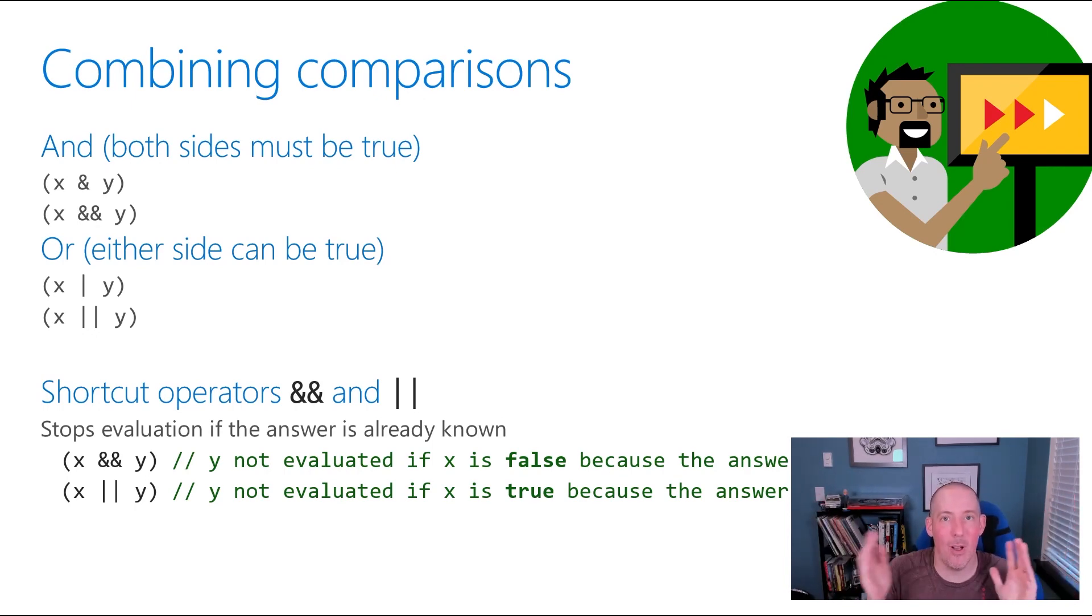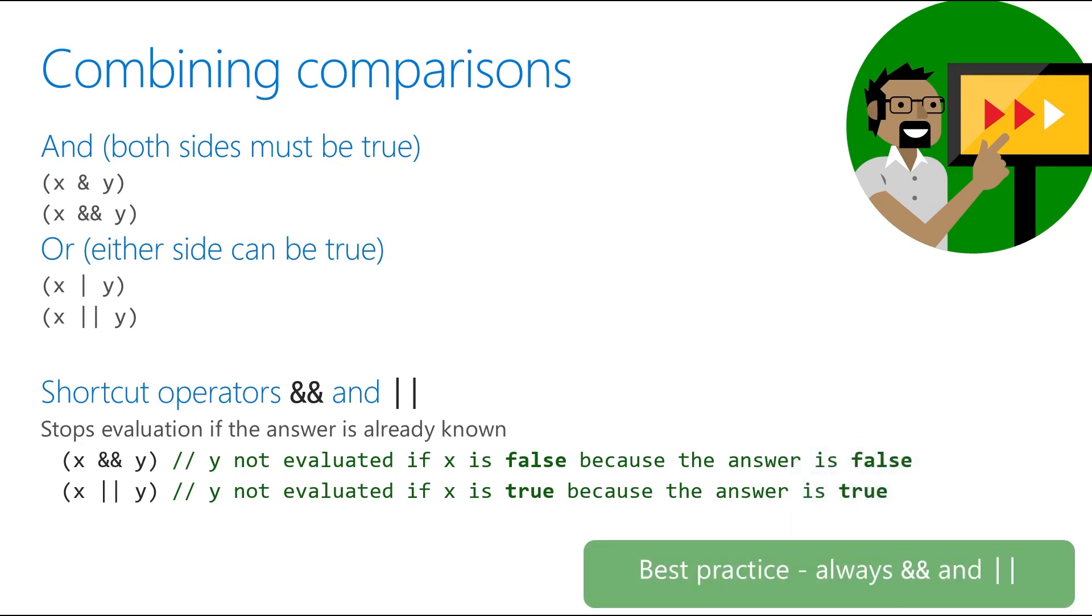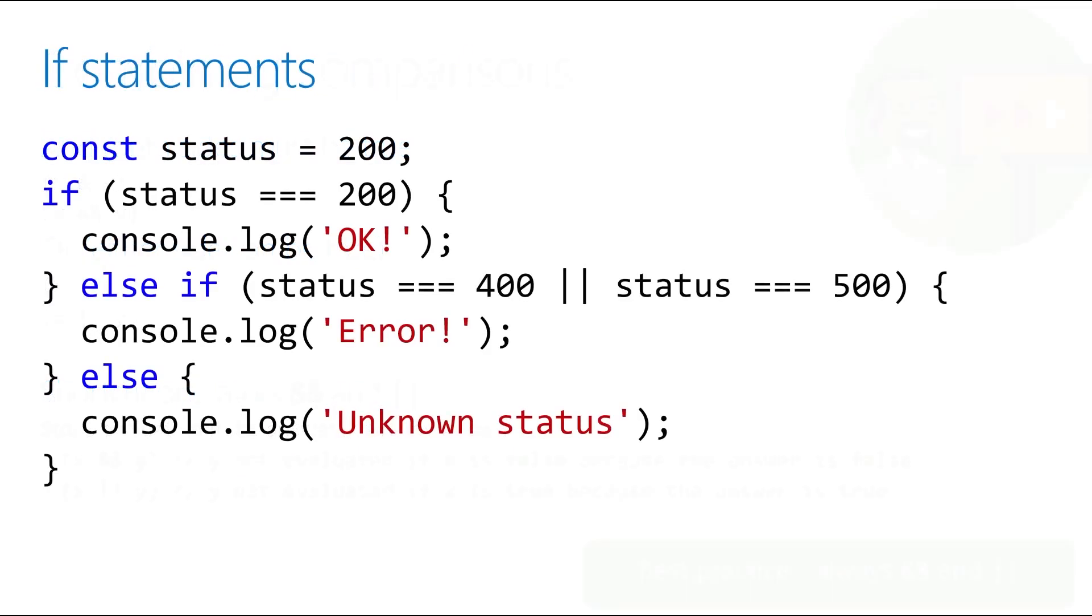And the same is going to hold true with our OR statement. Of course, the difference is the fact that if the first one is true, now we know it's going to test as true, and so it will wind up skipping that one. As a general rule, you want to use that double ampersand and pipe pretty much always, because it's always going to be what you want. I've only run into a couple of cases where what I wanted was the single one.